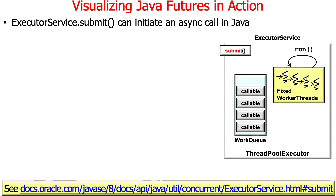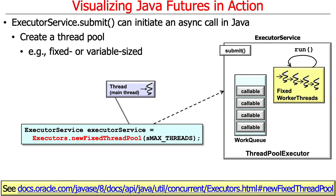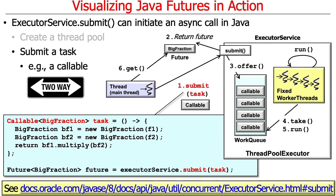A submit call is made on the executor service, and the executor service is basically a pool of threads that you can implement in different ways. You can implement it with a fixed pool of threads or a variable size pool. Here we're going to use a fixed size thread pool with four threads just to make it easy.